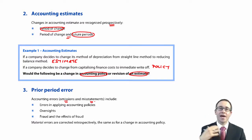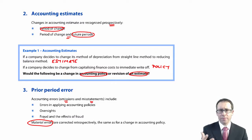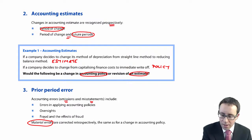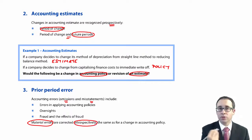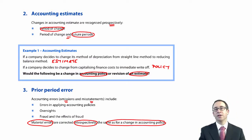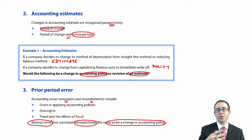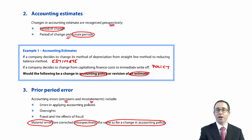Errors are only corrected if they are material. If they're immaterial, that is not relevant, so we're not too worried. The key point is that we go back and adjust retrospectively — exactly the same as with a change in accounting policy. You update last year's comparatives to correct the error, and the correction — whether it increases or decreases assets or liabilities — gives a debit or credit entry that appears within your opening retained earnings balance, adjusted in the statement of changes in equity.